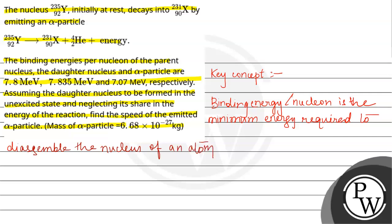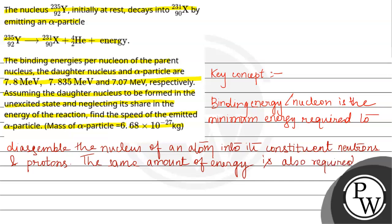To disassemble the nucleus of an atom into its constituent neutrons and protons. The same amount of energy is also required to combine individual protons and neutrons into a single nucleus.